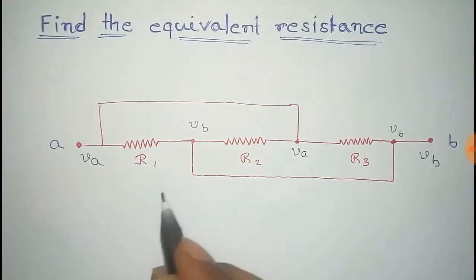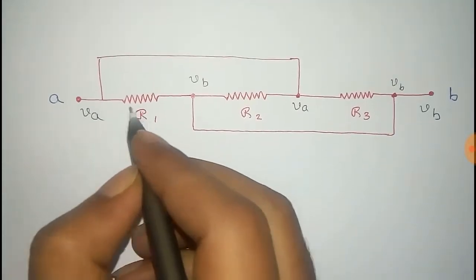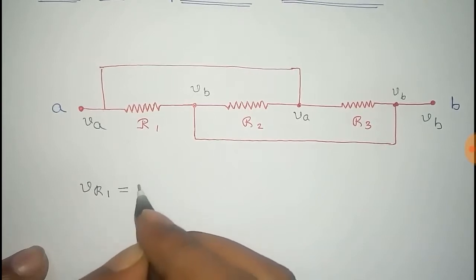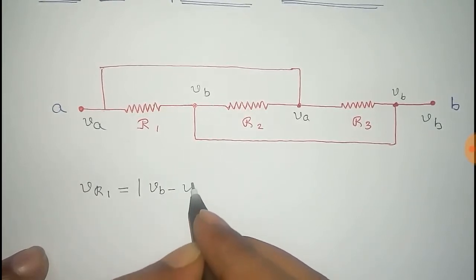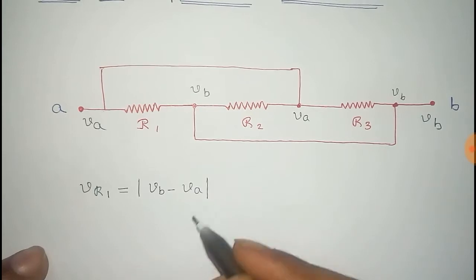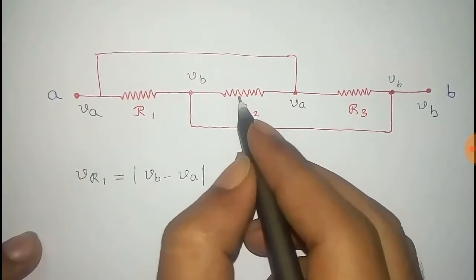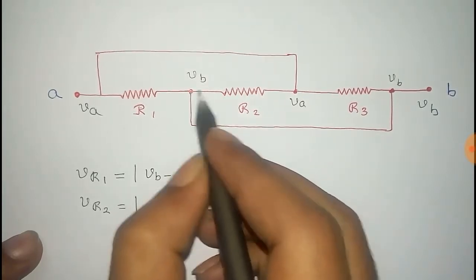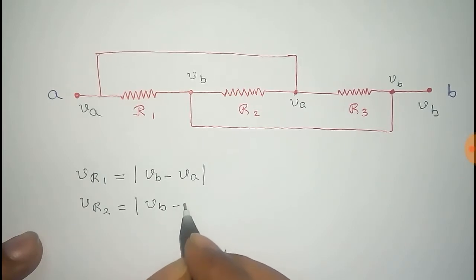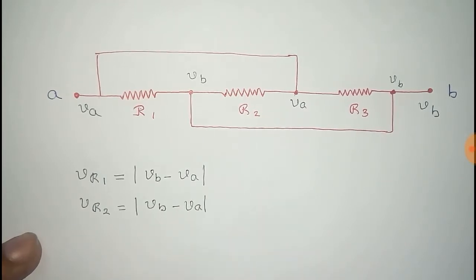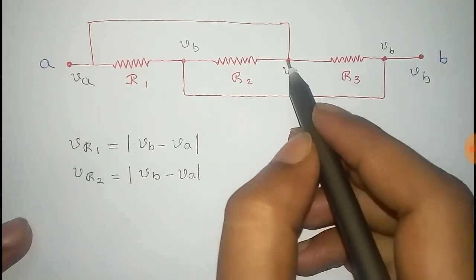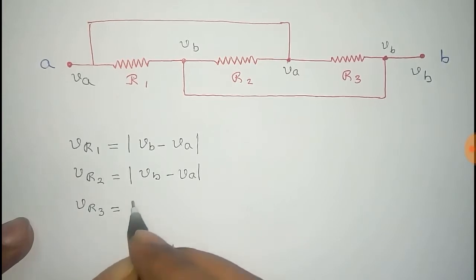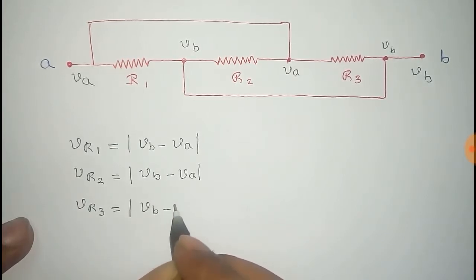The potential difference across resistor R1 is |VA − VB|. Similarly, the potential difference across R2 is |VB − VA|. The same applies to resistor R3 — the potential difference across it is also |VA − VB|.